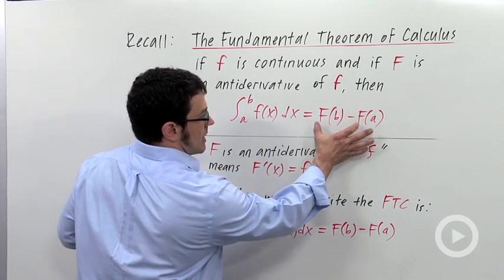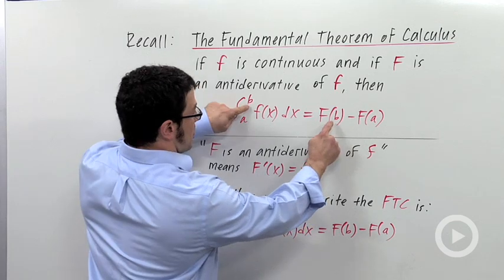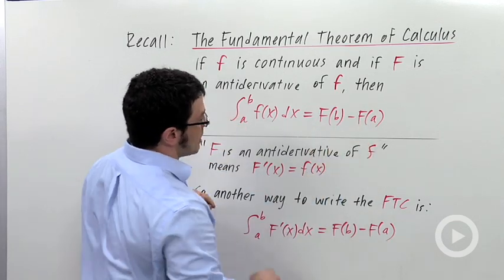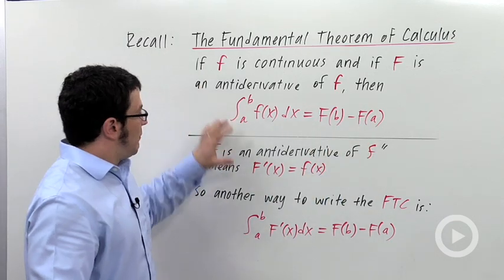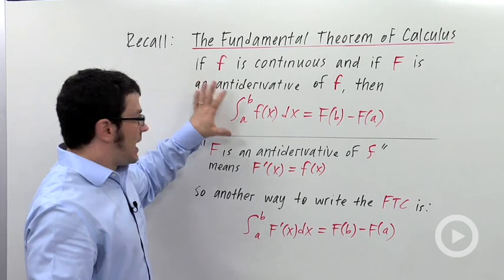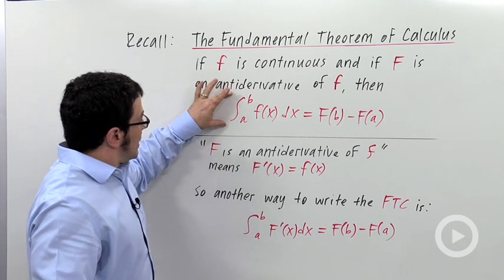So this is my antiderivative and I'm evaluating it at b and at a. This is generally how we evaluate definite integrals whenever we can. But there's another way to look at this.